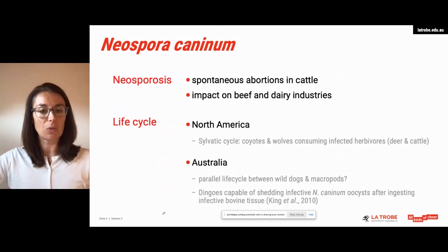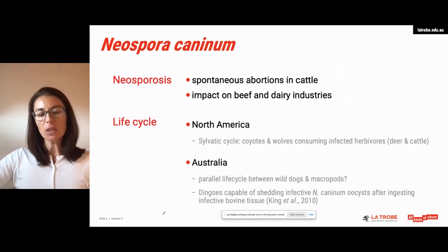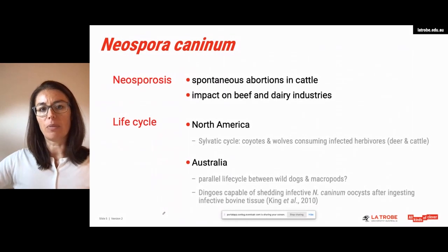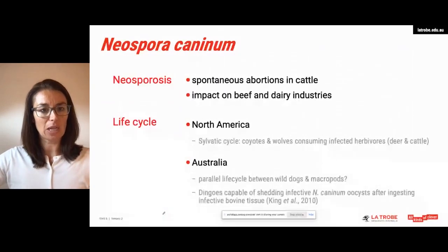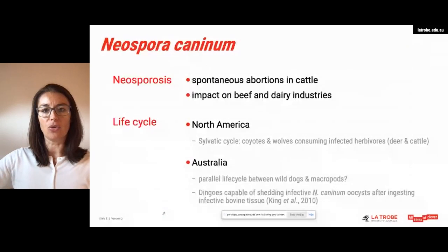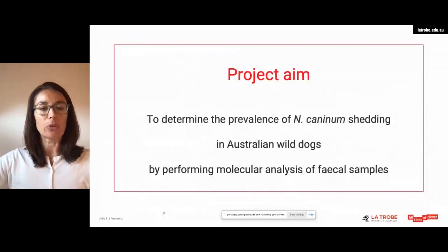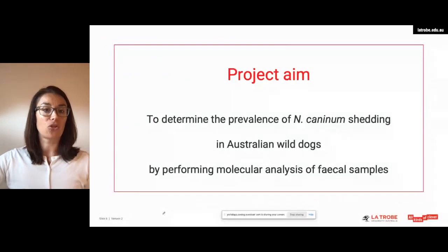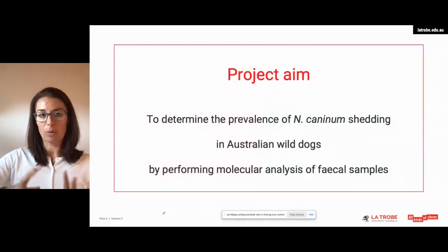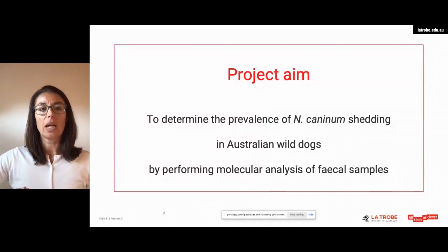One of the few pieces of evidence implicating wild dogs in this infection is that paper where wild dogs were infected in a controlled setting with infective bovine tissue, and the authors observed that these animals were heavily shedding infective oocysts. That really brings me to the aim of this particular project: to determine the prevalence of N. caninum shedding in Australian wild dogs in the wild, not in an experimental controlled setting, by performing molecular analysis of fecal samples.